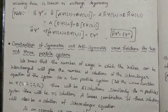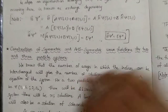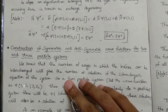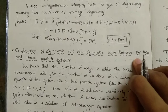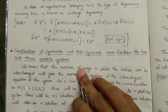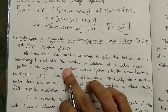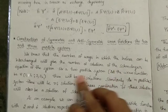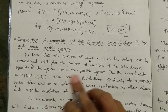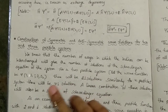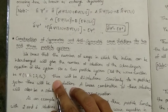In the previous video, exchange degeneracy was discussed. Now let's discuss the construction of symmetric and anti-symmetric wave functions for two and three particle systems. The number of ways the indices can be interchanged gives the number of solutions of the Schrödinger equation of the system. For a two particle system, let the wave function be ξ(1, s1; 2, s2).